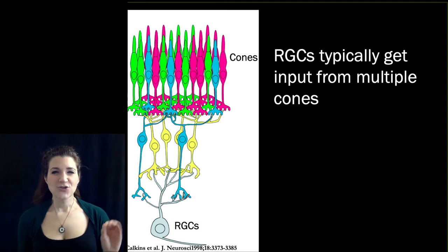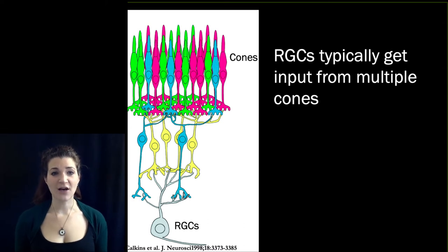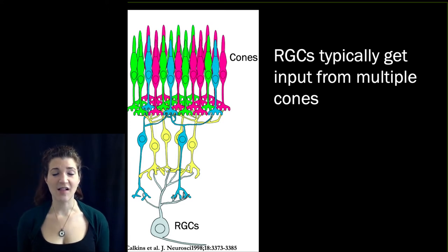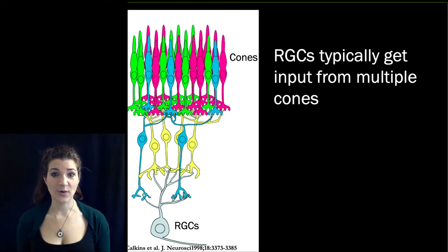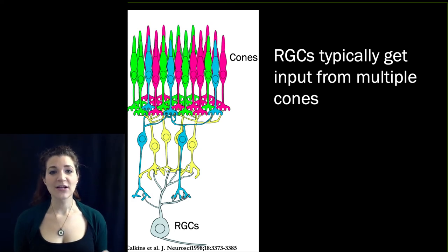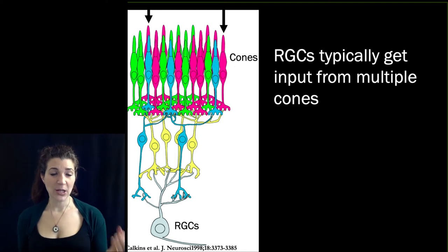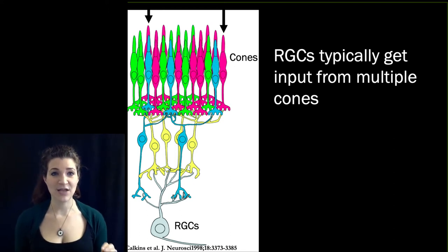Critically, each retinal ganglion cell gets input from multiple different cones simultaneously. Here's a schematic of a retinal ganglion cell whose activity is affected by something like two dozen different cones. So the signal sent to the brain from that retinal ganglion cell is influenced by lots and lots of cones. One consequence of this is that it limits the spatial resolution of the eye — this retinal ganglion cell can't tell the difference between activity in this cone versus that cone.